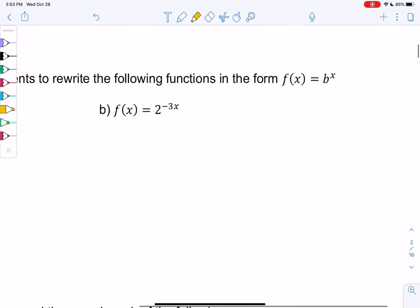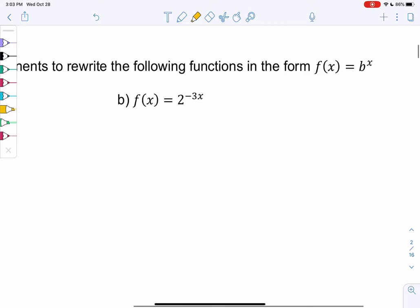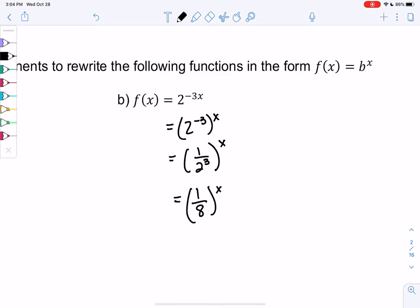Let's try one more. 2 to the negative 3x is not quite in that form, so I'm going to split them up again. 2 to the negative 3 and then factor out the power of x. It's still 2 to the negative 3x, I've just written it with parentheses. We learned that a negative is a reciprocal. So 2 to the negative 3 is 1 over 2 cubed, and then all to the x power. 2 cubed is 8, so we get 1 eighth to the x. That'll be my function in the b to the x form.